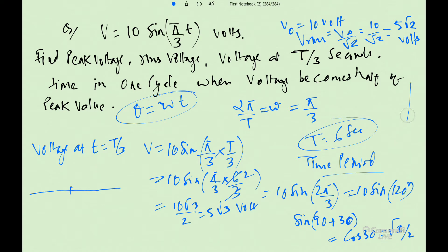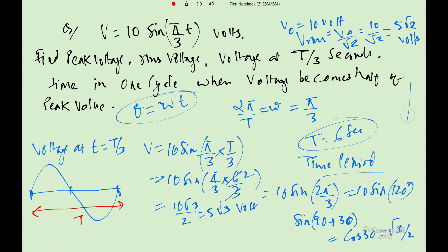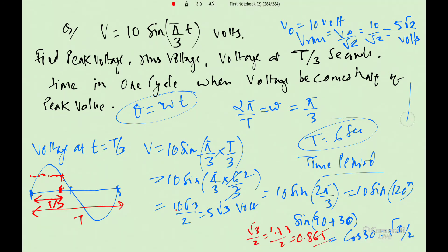Checking on the graph: the whole time period is 6 seconds. At t = T by 3, which is at 1/3rd, t by 3, the corresponding value is root 3 by 2 = 1.73 by 2 = 0.865. So 0.865 times 10 gives 8.65 volt. Answer is 8.65 volt.